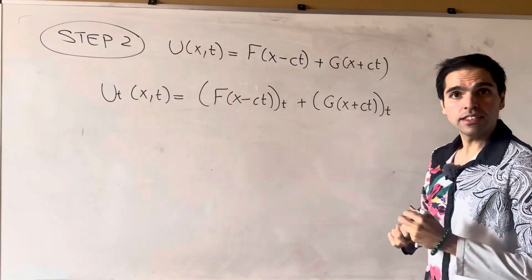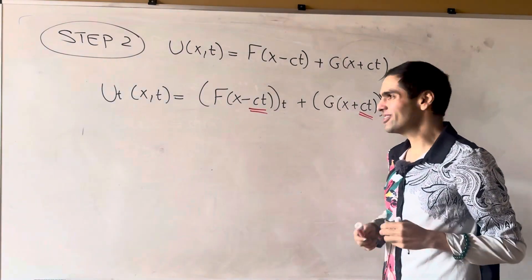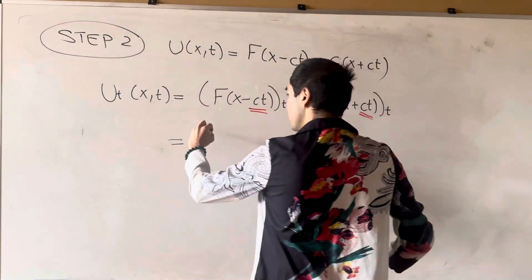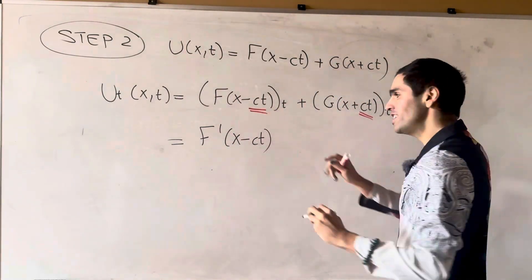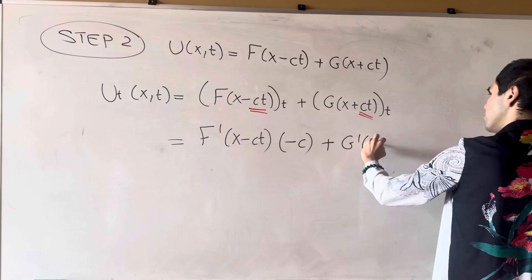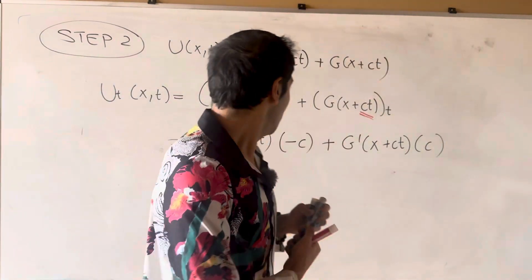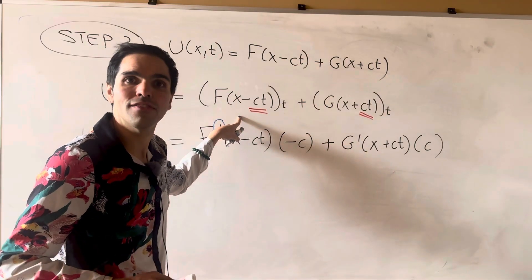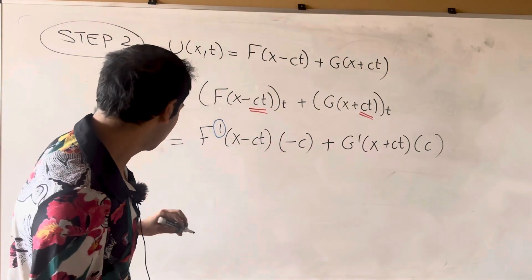And, because the inside here depends on t, we need to use the chain rule. In particular, we first differentiate the outside, which is f prime of x minus ct, and then we differentiate the inside, which gives us a minus c. And same thing for g. So g prime of x plus ct, and then times c. Now, you may wonder, what is this prime? So here, f is a function of one variable, which is x minus ct, and we differentiate f with respect to that variable.